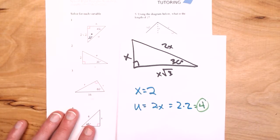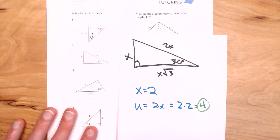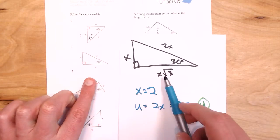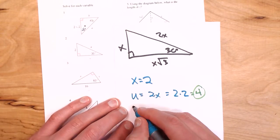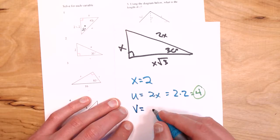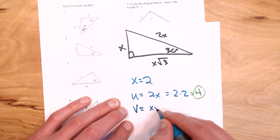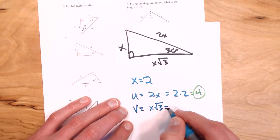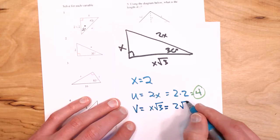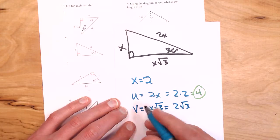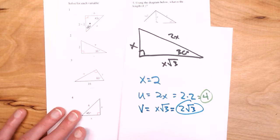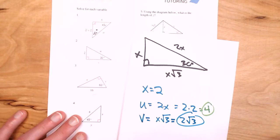To find V, I equate that side with X root three. So V equals X root three, which equals two root three, because X is just two. So that's both answers — U is four and V is two root three.